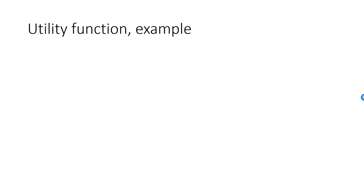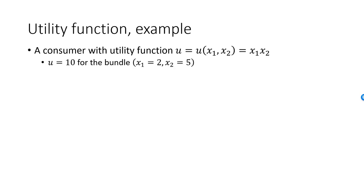Here is a simple example. Let's say that we have a consumer with utility function U, which is equal to x1 times x2. Perhaps good one is cookies and good two is milk. If she consumes two cookies and five glasses of milk, her utility of this bundle is two times five, or ten.